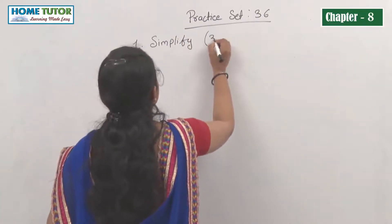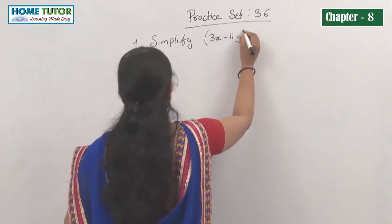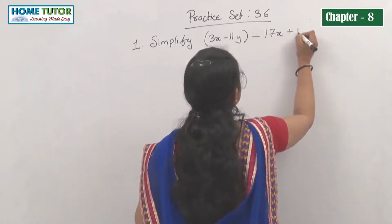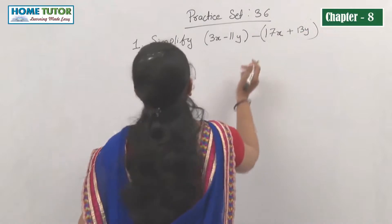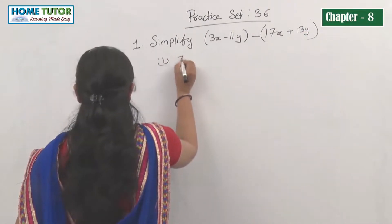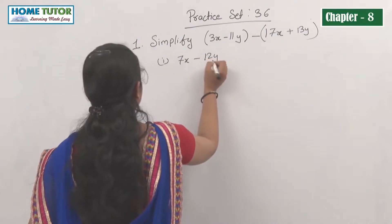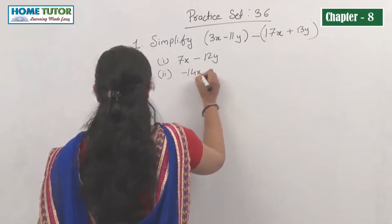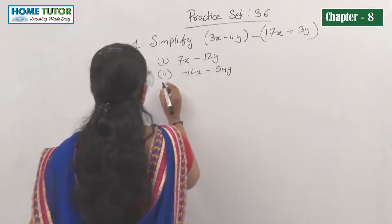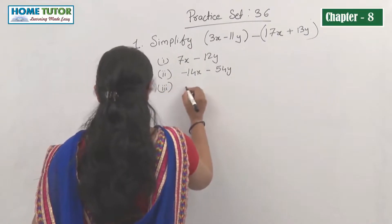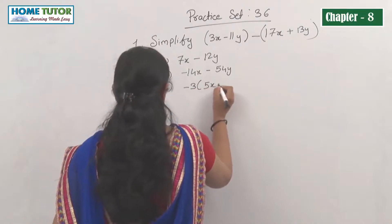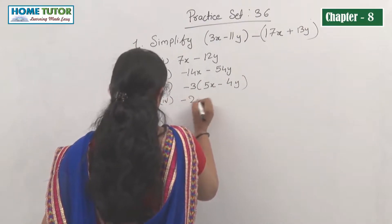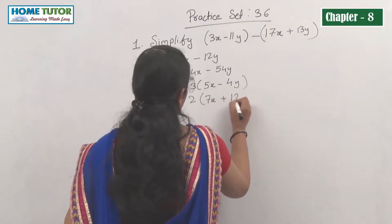The expression given is 3x minus 11y minus 17x plus 13y. The options given are: first, 7x minus 12y; second, minus 14x minus 54y; third, minus 35x minus 4y; and fourth, minus 2(7x plus 12y).